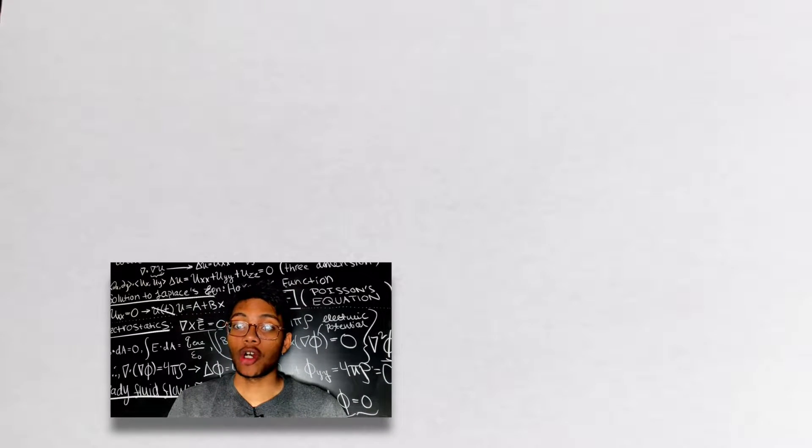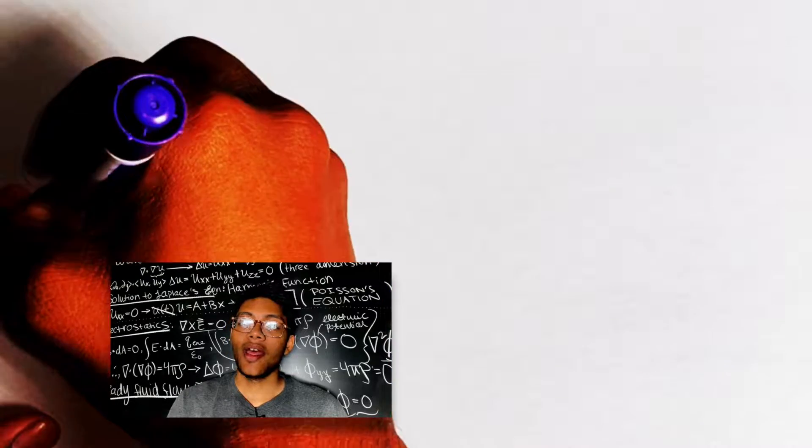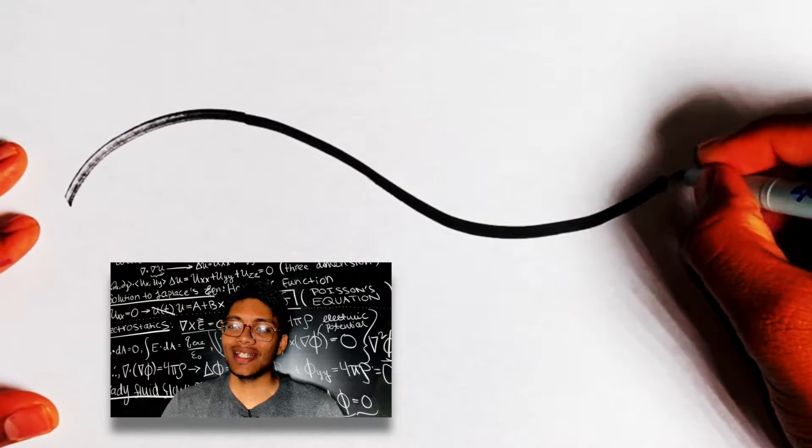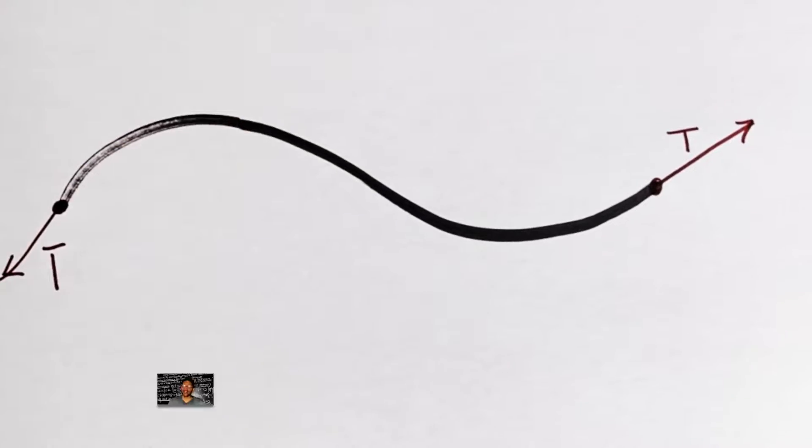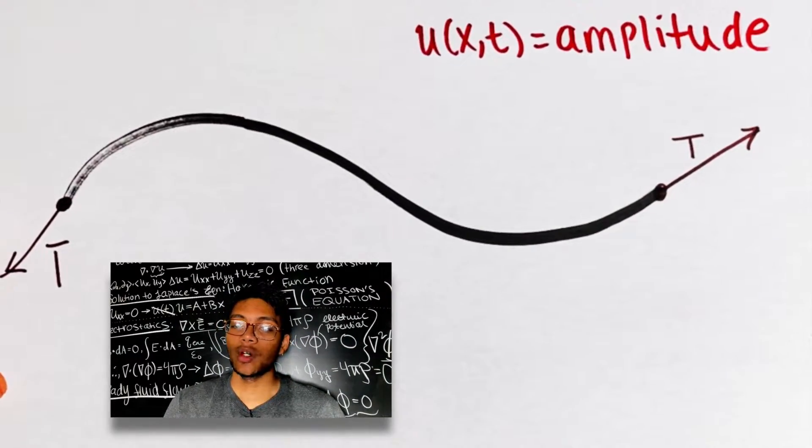The first step is to draw a wave, no surprise there. Then we're going to draw two vectors, which represent the tension force acting on the wave. Let's go ahead and zoom in into one part of the wave.